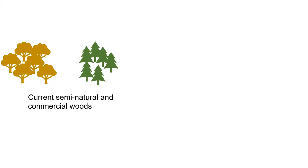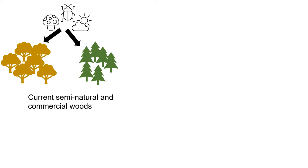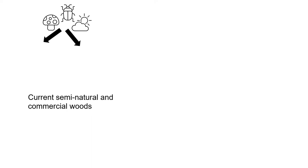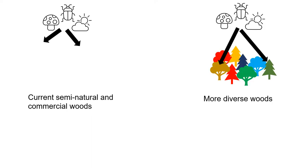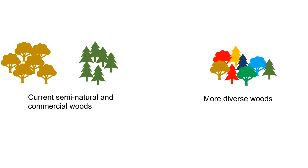This slide shows pictorially the background to Diversity Tree. Currently, our semi-natural and commercial woodlands are often dominated by just a few species. We know that trees are threatened by a range of pests, pathogens, and climate change, and if these particularly impact dominant species, that could have a major impact on our woodlands. However, in a more diverse woodland, the same range of threats would only impact a few species.